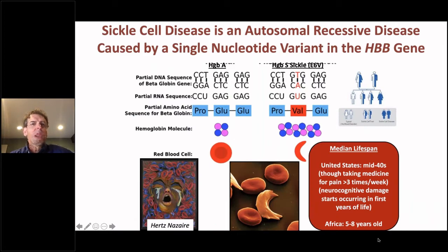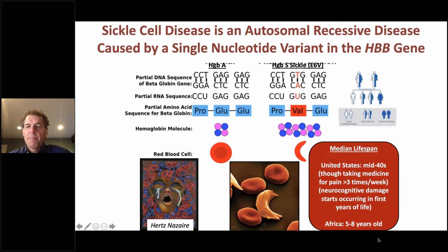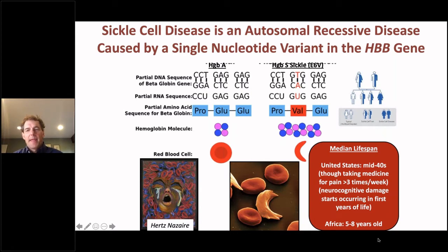We want to apply this system to sickle cell disease. As this audience well understands, this is a disease in which a single nucleotide change in codon 6 of the beta-globin gene leads to a single amino acid change, causing the hemoglobin molecule to behave aberrantly in the deoxygenated state, causing polymerization and adoption of the sickle — or banana — cell shape. This disease has devastating morbidity in all patients and early mortality in all parts of the world.